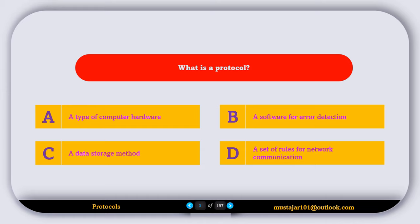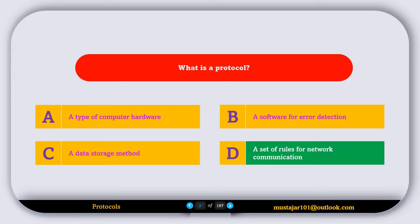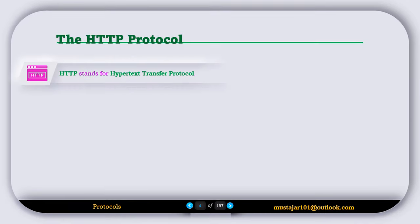What is a protocol? Option A, a type of computer hardware. Option B, a software for error detection. Option C, a data storage method. Option D, a set of rules for network communication. The correct answer is Option D — a protocol is a set of rules for network communication.